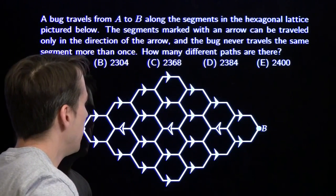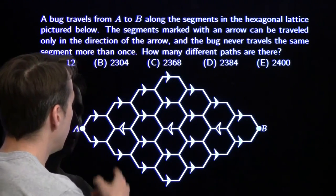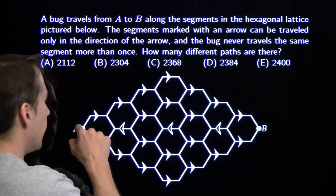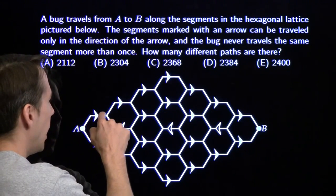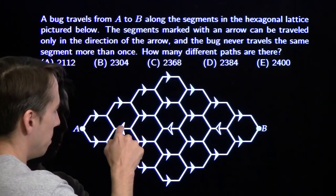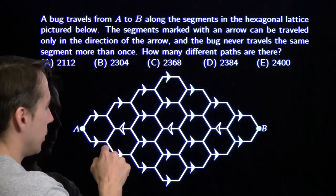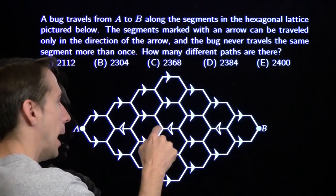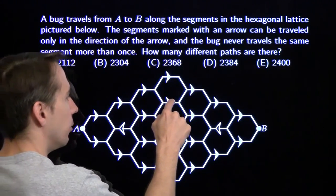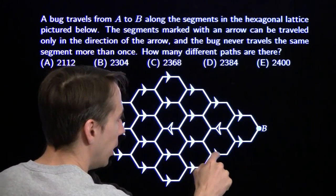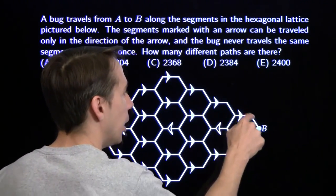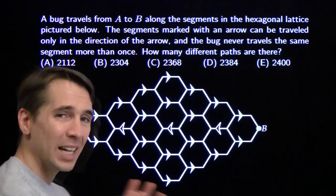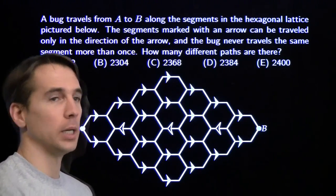What makes this really hard are the back arrows, because the bug can go out and then back, and then forward, and then back, forward, on down, all the way up. The bug can go kind of all over the place — there are lots of things the bug can do.